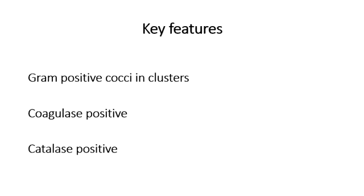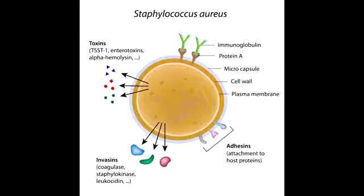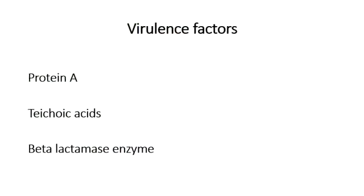Staphylococcus aureus also has a number of specific virulence factors. We're going to touch upon three independently here, and then discuss more when we cover the diseases it causes. The three to think about initially are: Protein A found in its capsule, the teichoic acids associated with the cell wall and capsule, and its ability to fight penicillin antibiotics using a beta-lactamase enzyme.